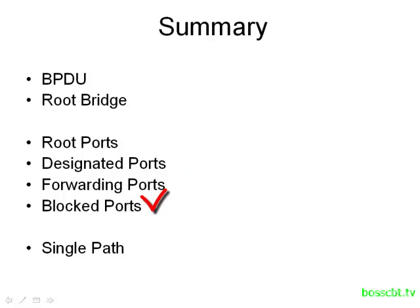All other ports — ports that are not root ports and not designated ports — are put into a blocking state. Blocked ports do not forward any production traffic, so a blocked port is what's responsible for breaking up the loops in a network. Keep in mind, BPDUs can still be received on blocked ports so that the switch can still communicate with its neighbor. Ultimately, Spanning Tree achieves its goal of creating a single path from each non-root switch back to the root switch. That is how Spanning Tree works. After this tutorial, go ahead and take a look at the next one, which gets into more detail on how the root bridge is elected in a Spanning Tree network. Thanks for watching.